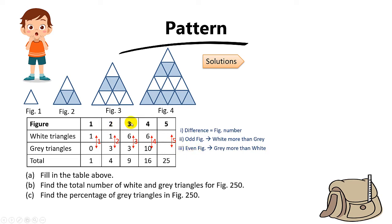On the other hand, if the figure number is even, the grey triangles are more than the white triangles. And lastly, we know the total triangles is basically the square of the figure number. 1×1 = 1, 2×2 = 4, 3×3 = 9, 4×4 = 16, and 5×5 = 25.